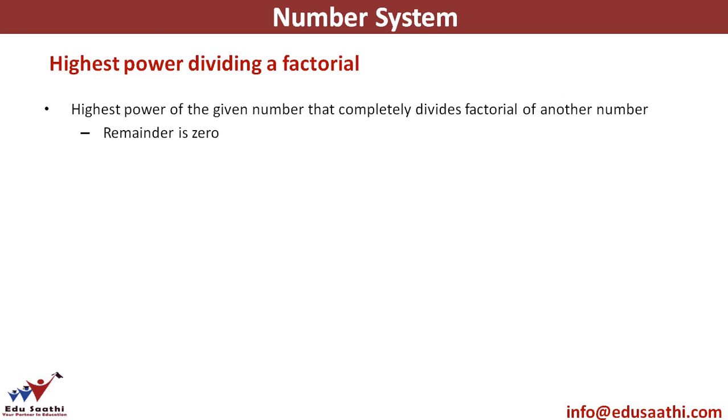Highest power of the given number is what we have to find that divides the factorial of another number. Divides the factorial of another number means it completely divides. That means the remainder should be zero. That means the factorial should actually be a multiple for the given number.